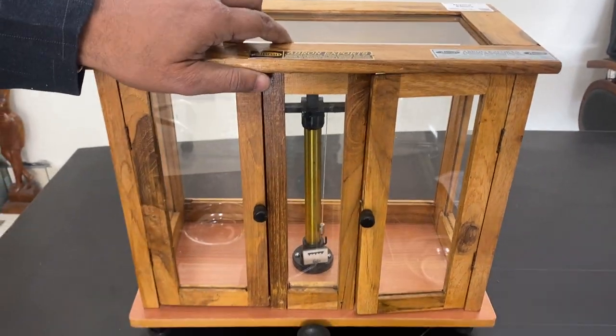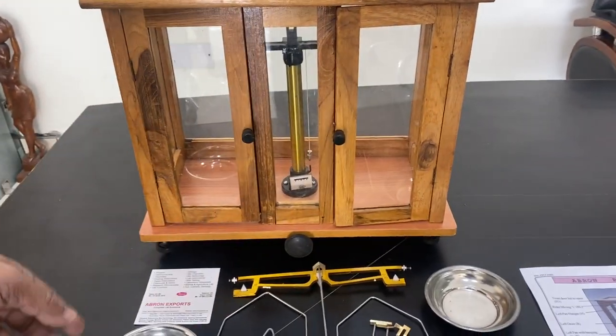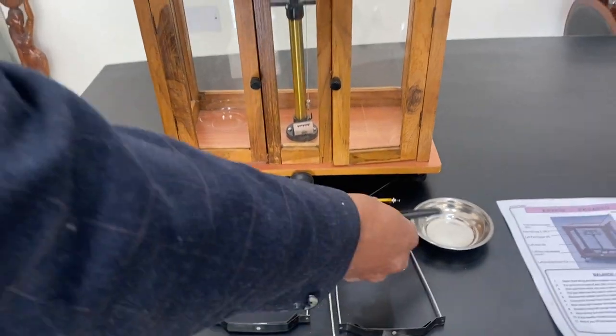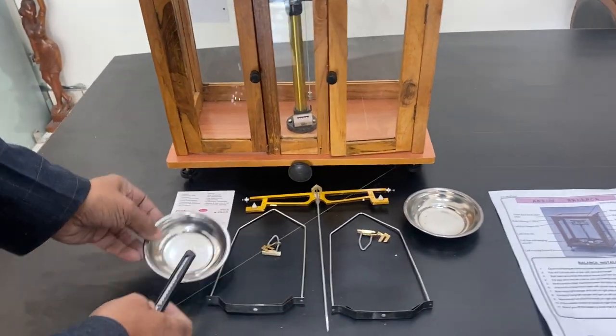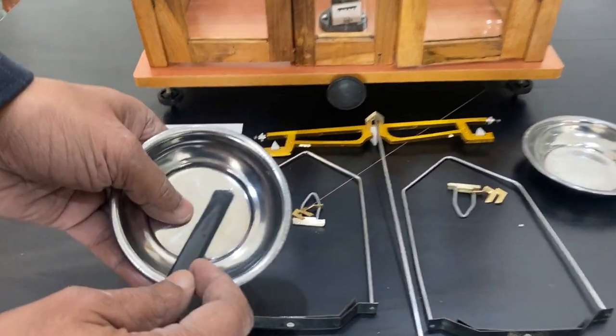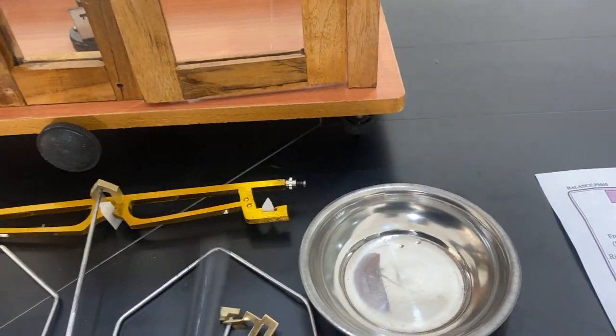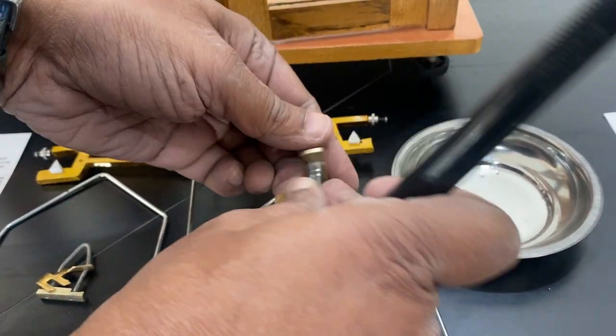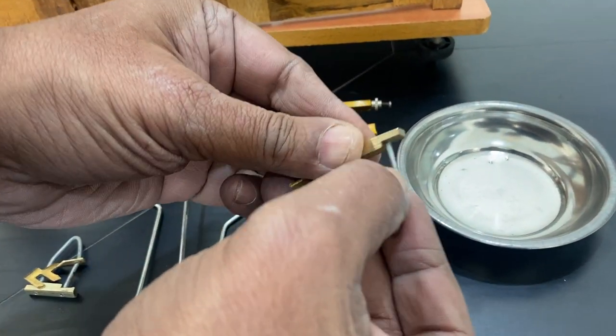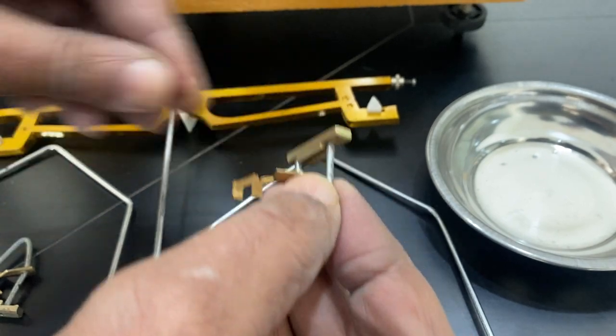First, you need to see what the parts are. When you open the box, everything comes with the packing. There is a single dot knob here, and there are two dots on this and two lines on this. You can see the two lines here.